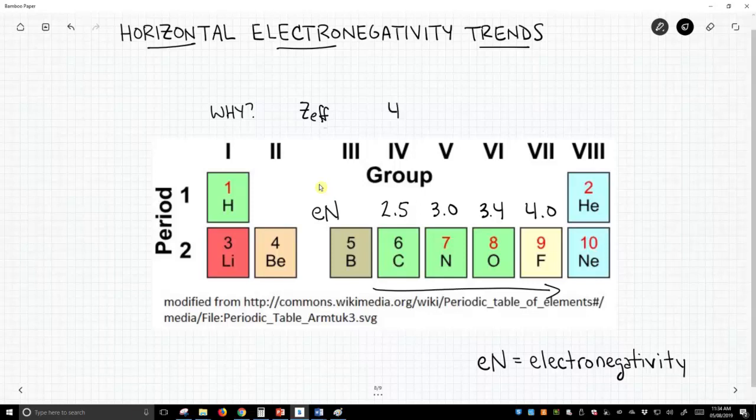Carbon has four valence electrons and an effective nuclear charge of 4. Nitrogen is 5, oxygen is 6, and fluorine is 7.